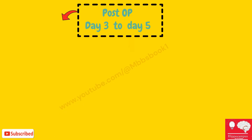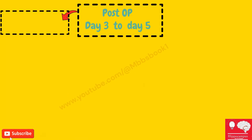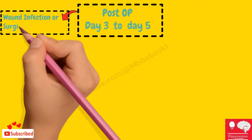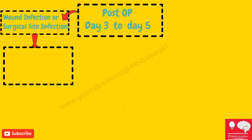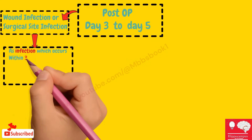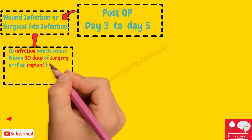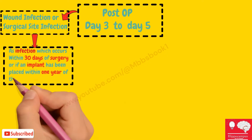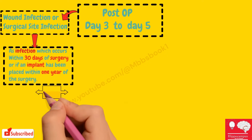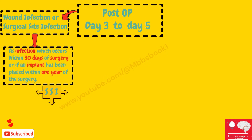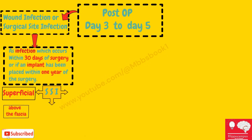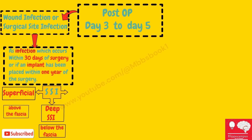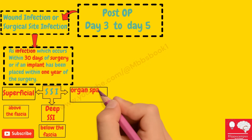Between postoperative day three to day five, the patient can develop wound infection or surgical site infection. Surgical site infection is defined as infection occurring within 30 days of surgery, or within one year if an implant has been placed. Wound infection can be superficial surgical site infection (above the fascia), deep surgical site infection (below the fascia), or organ space surgical site infection.